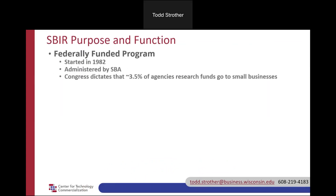The SBIR program is actually several programs within the federal government. It was started in 1982 to help provide research dollars to small businesses. Congress mandates that 11 federal agencies devote about 3.5% of their research dollars to fund small business research and development. The overall program is managed by the Small Business Administration, but the 11 agencies have their own rules and guidelines as well.